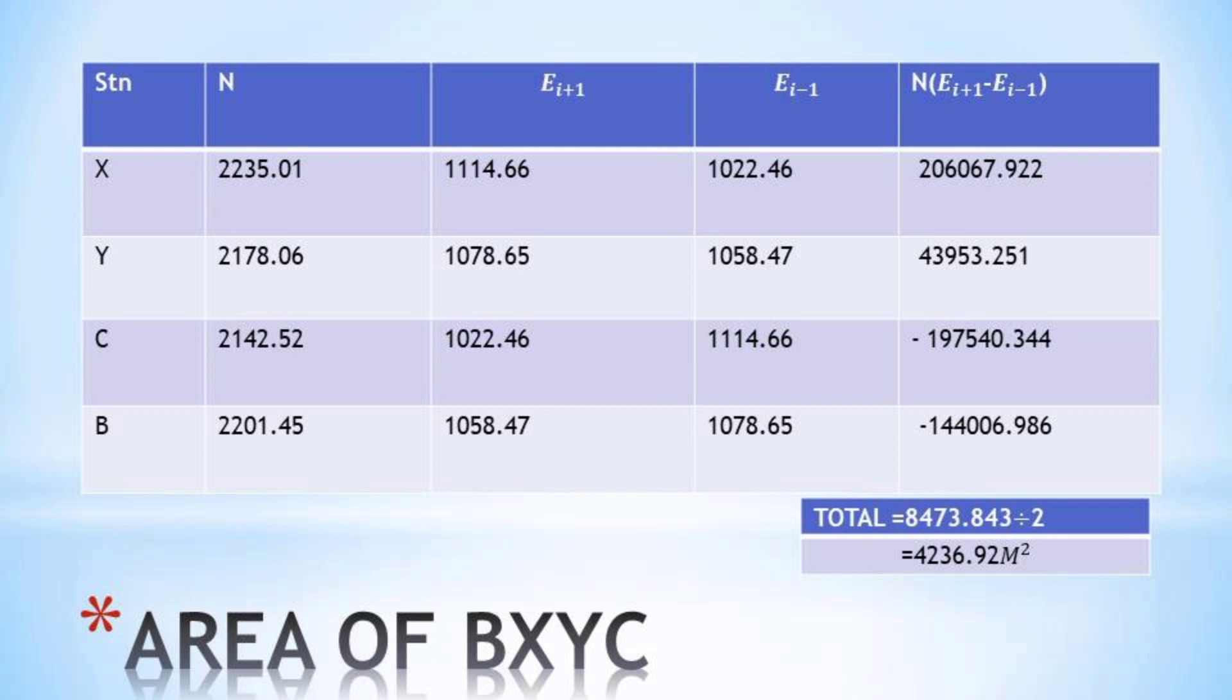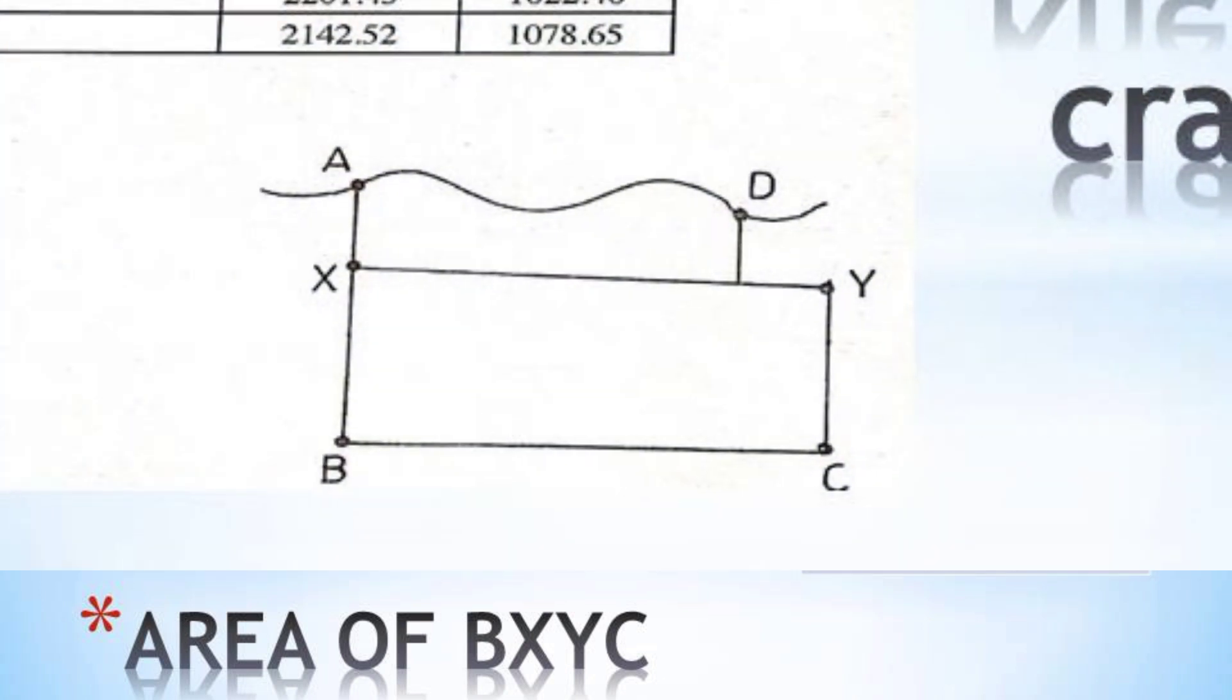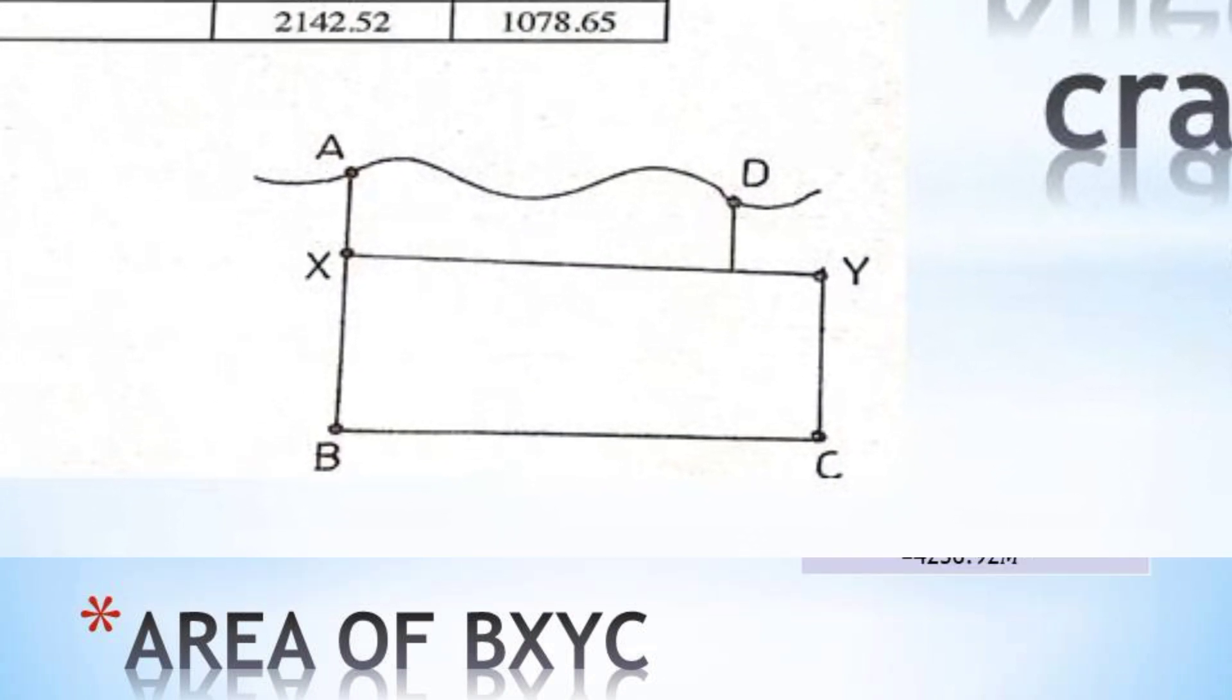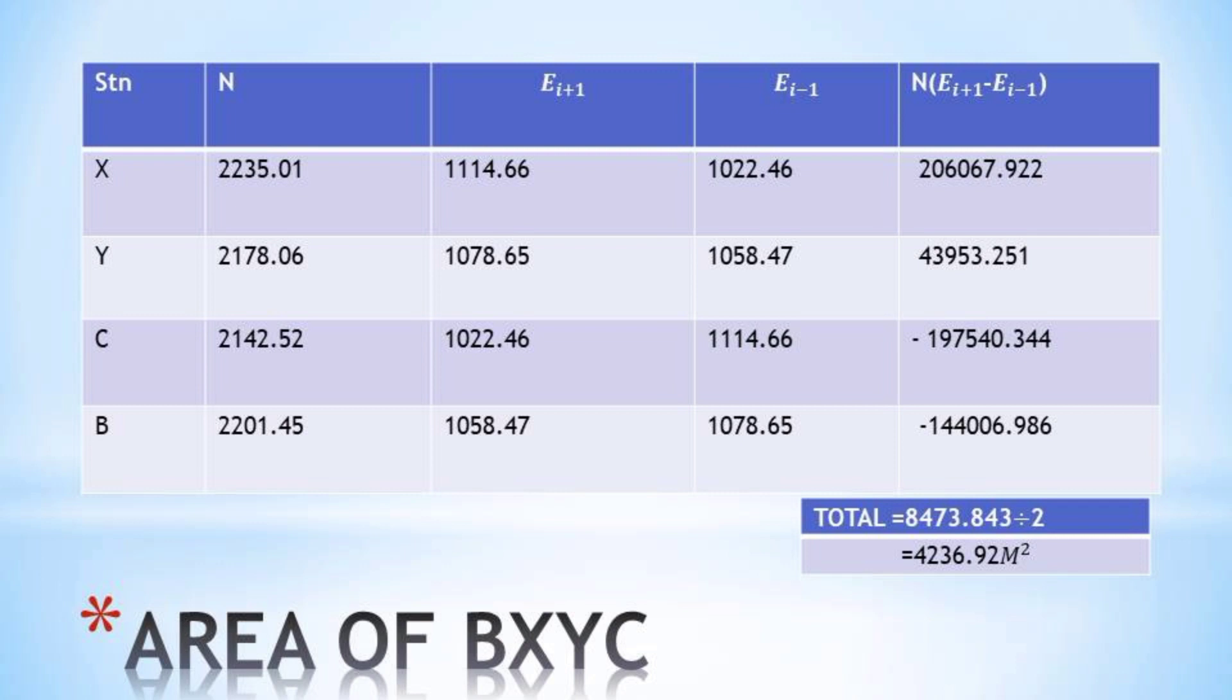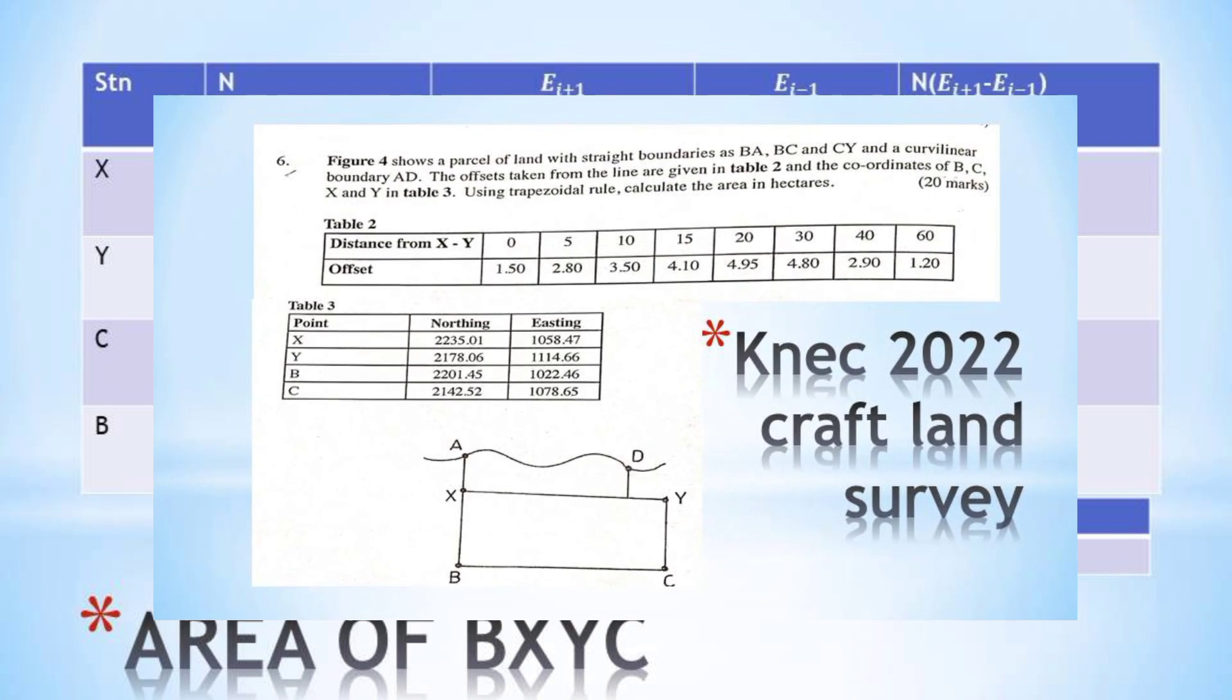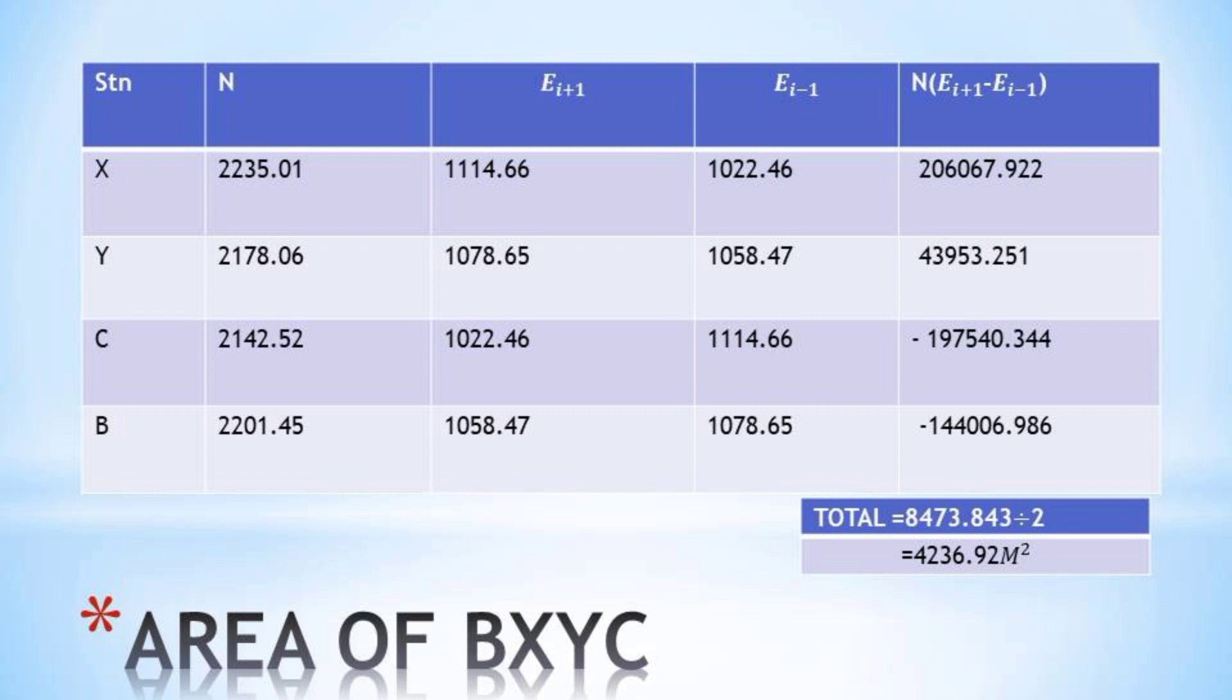In our third column, the easting for the station which is found after X - that station will be Y - so you write the easting for station Y. In our next column, we write the easting for the previous station - that station is B. Having done that, in our last column we find the difference in both the eastings, then multiply that answer by the northing.